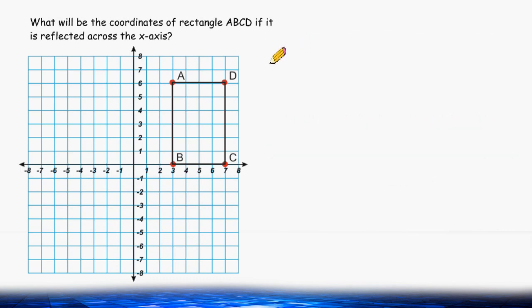Point A is located at (3, 6). Point B is located at (3, 0).